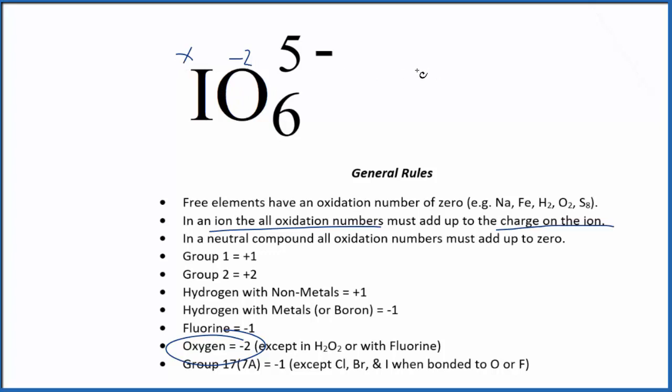X minus 2 times the 6 should equal negative 5, because that's the charge on the ion. X minus 12 equals negative 5. We add 12 to both sides, and X will equal a positive 7.